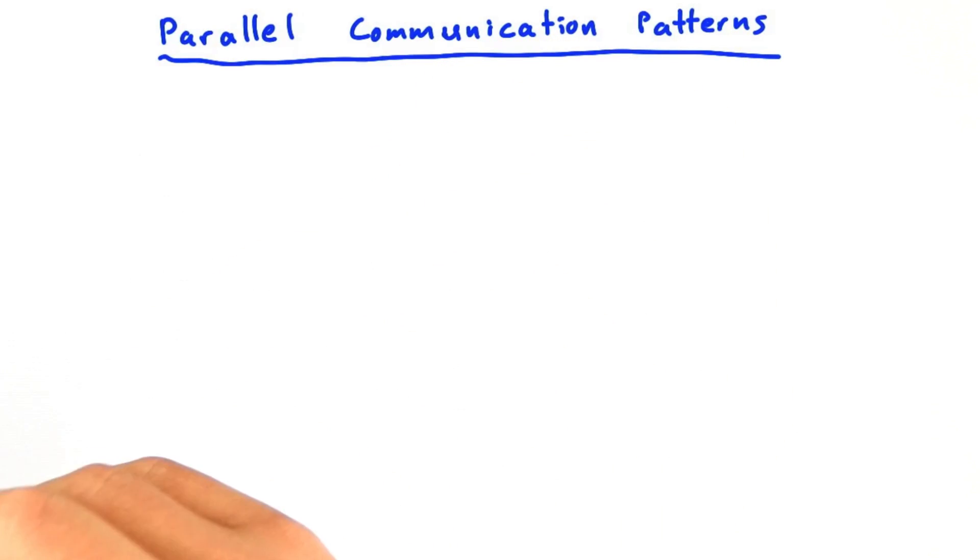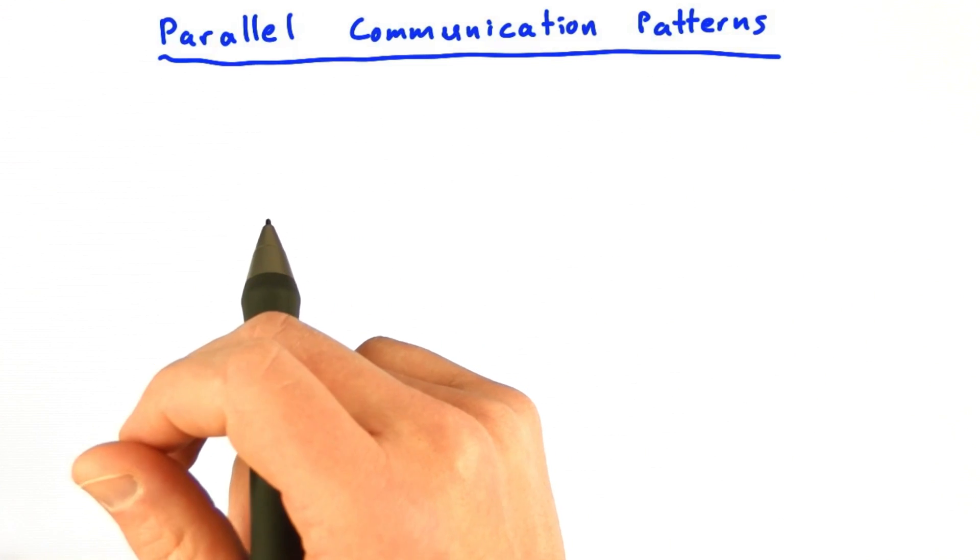Let's talk about the different kinds of communication, the different patterns of communication you'll see in parallel computing. This is really all about how to map tasks and memory together, how to map tasks, which are threads in CUDA, and the memory that they're communicating through.